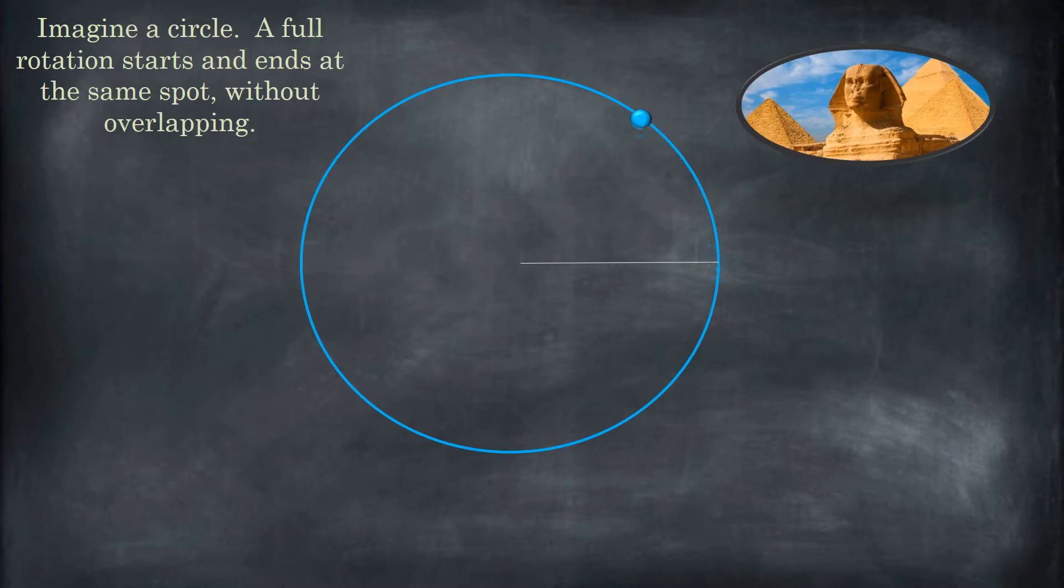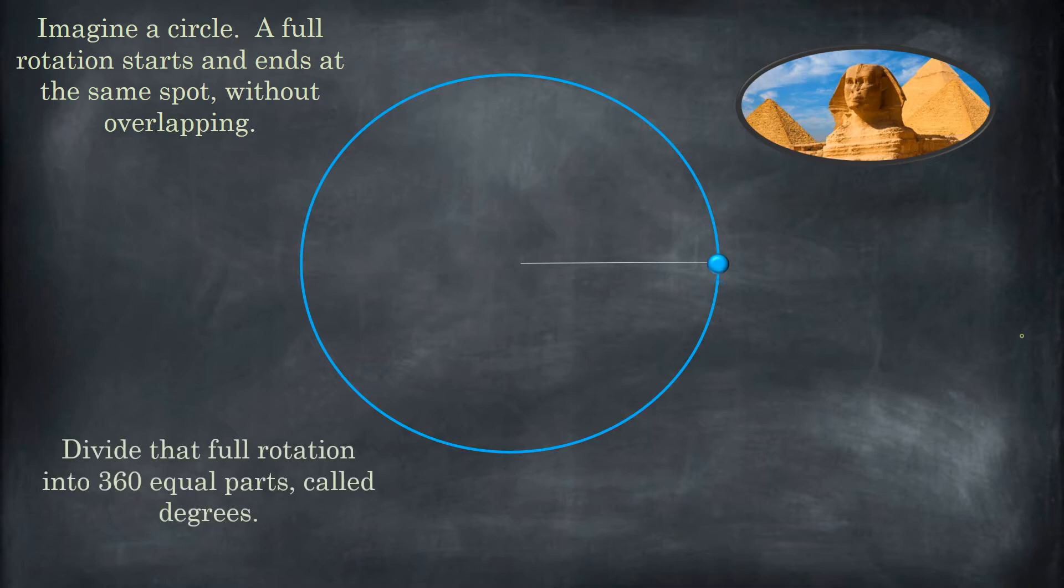So if you have a circle and you make a complete rotation, that means you stop where you started. You go all the way around just once. If you divide that rotation equally into 360 parts, that's what degrees are. So one degree is 1/360th of a circle, a very tiny rotation.